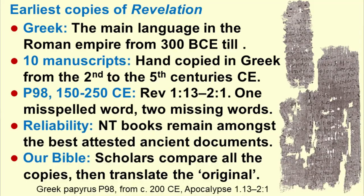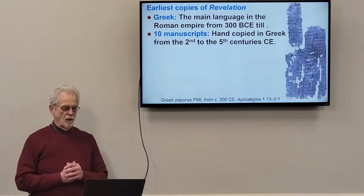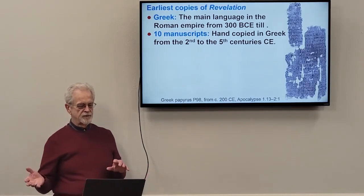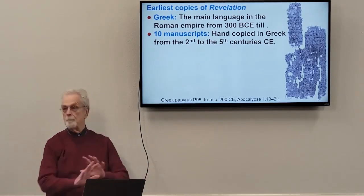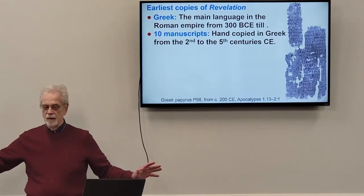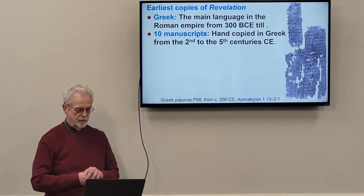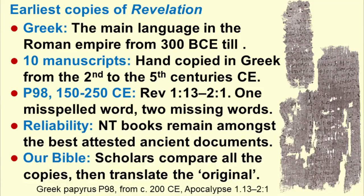There are at least ten manuscripts — a manuscript is a document written by hand — copied in Greek between the 2nd and the 5th century CE, with many more after that. Here you have a fragment, papyrus number 98, copied about 200 CE — in other words, about a century after the original was written.